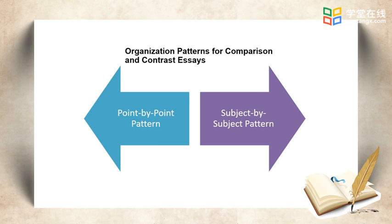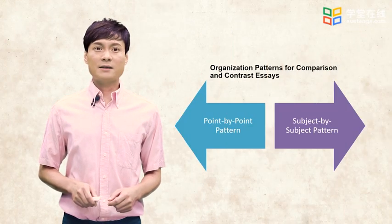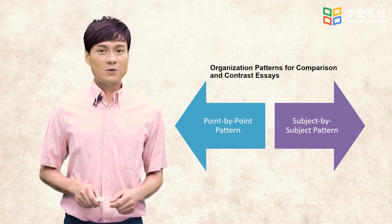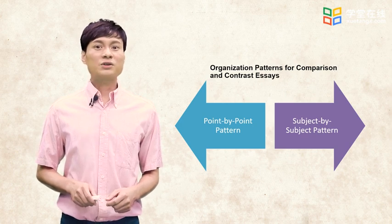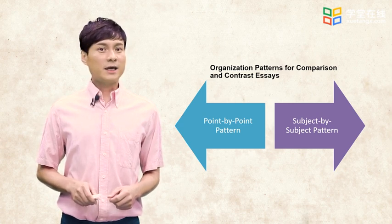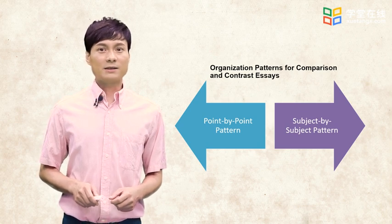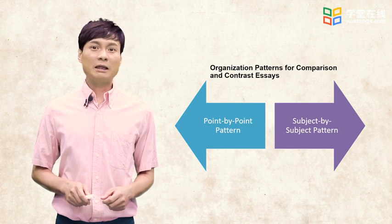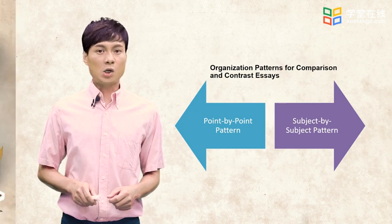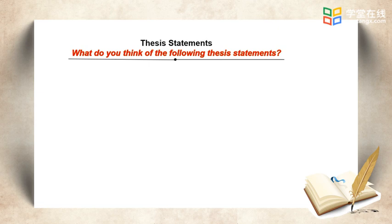We talked about two common organization patterns for comparison and contrast essays: the point-by-point pattern and the subject-by-subject pattern. The first pattern works better in longer essays with many similarities or differences to cover, and is mostly used to make the writing more effective through sharp contrasts. On the other hand, the second pattern can function well in shorter essays with fewer similarities or differences, and is suitable for explaining closely connected similarities or differences when the writer's interest is in a whole. Now, let's move on to the focus in lesson three: thesis statements.